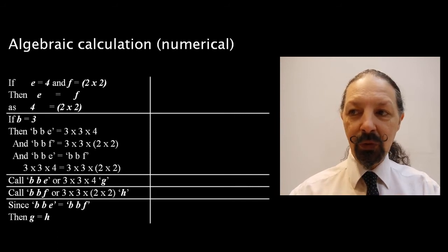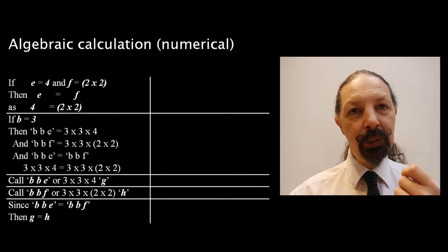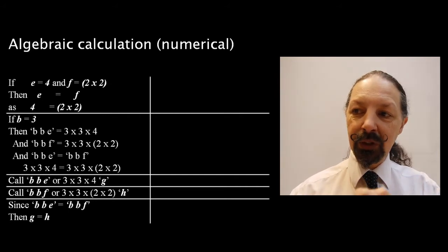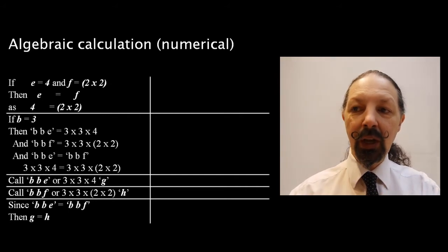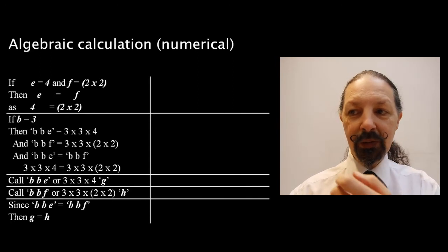Let's call BBE, or 3 times 3 times 4, G, and let's call BBF, or 3 times 3 times 2 times 2, H. Since BBE is equivalent to BBF in value, then G equals H.